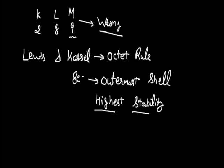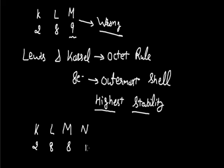The correct configuration for potassium is K2, L8, M8, N1 — that is 2, 8, 8, 1 — instead of 2, 8, 9.